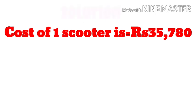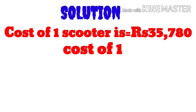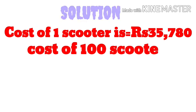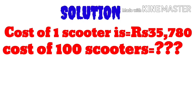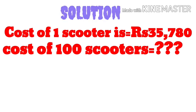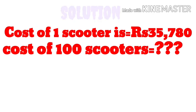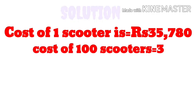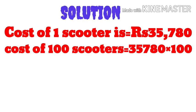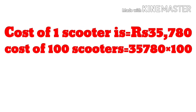The cost of one scooter is 35,780. You can see that you are going from one to many. I have told you that when you are going from one to many, you will do multiplication. The cost of 100 scooters will be: cost of one scooter, that is 35,780, multiplied by 100.